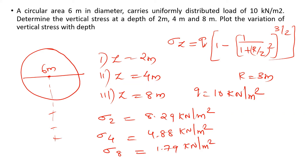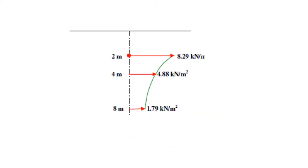Now we will plot the variation of vertical stress with depth. This is the variation for a circular area with a total diameter of 6 meters.